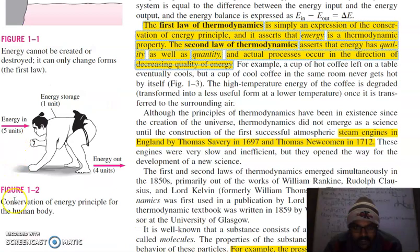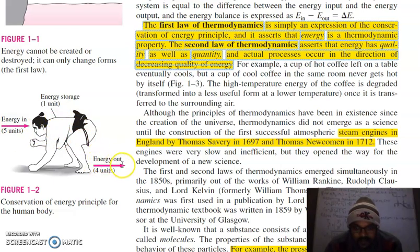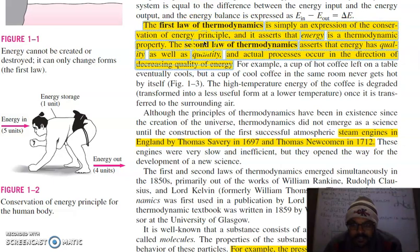In this figure, the conservation of energy principle for the human body is shown. Energy input to a person is 5 units; they do work of 4 units, meaning 1 unit of energy is stored in the form of body mass. The first law of thermodynamics is simply an expression of the conservation of energy principle, and it asserts that energy is a thermodynamic property.